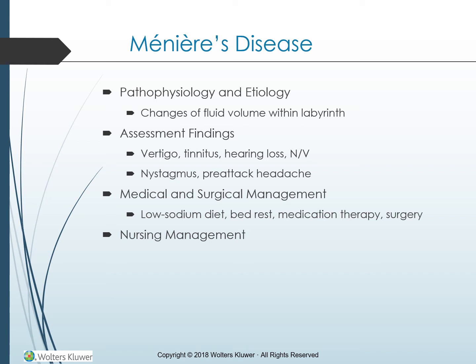Meniere's disease, also referred to as endolymphatic hydrops, is a disorder characterized by fluctuations in the fluid volume and pressure in the endolymphatic sac of the inner ear. This disorder causes distension of the endolymphatic compartment leading to a classic triad of symptoms: hearing loss, vertigo, and tinnitus. Generally, Meniere's disease affects only one ear but it can affect both. Meniere's disease most likely involves a primary lesion in the endolymphatic sac where filtration and excretion of inner ear fluids occur.